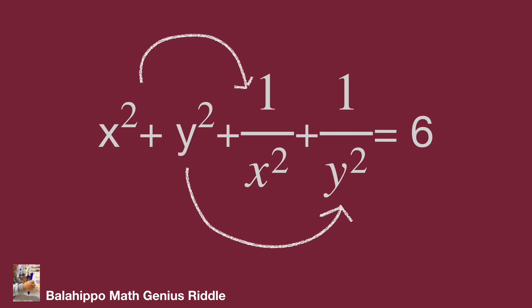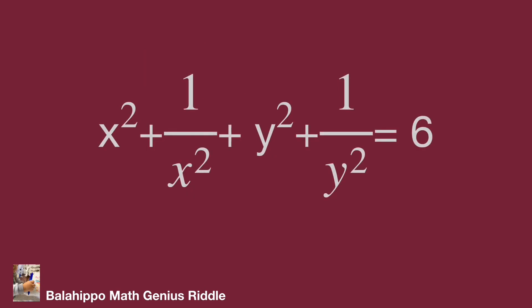But while we adjust the item sequence as x squared plus 1 over x squared plus y squared plus 1 over y squared equals 6, then we put x squared plus 1 over x squared as one group, and y squared plus 1 over y squared as another group.